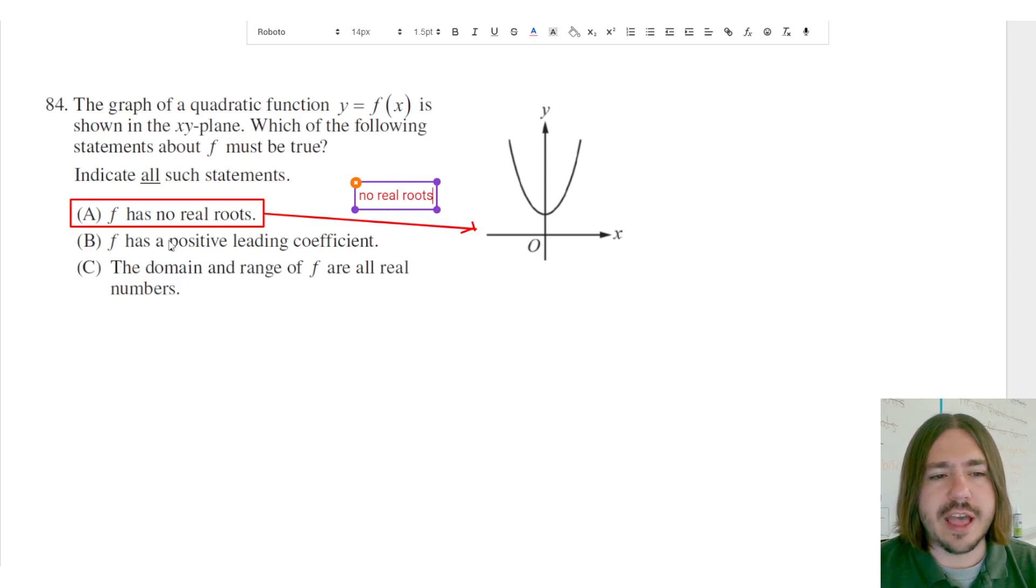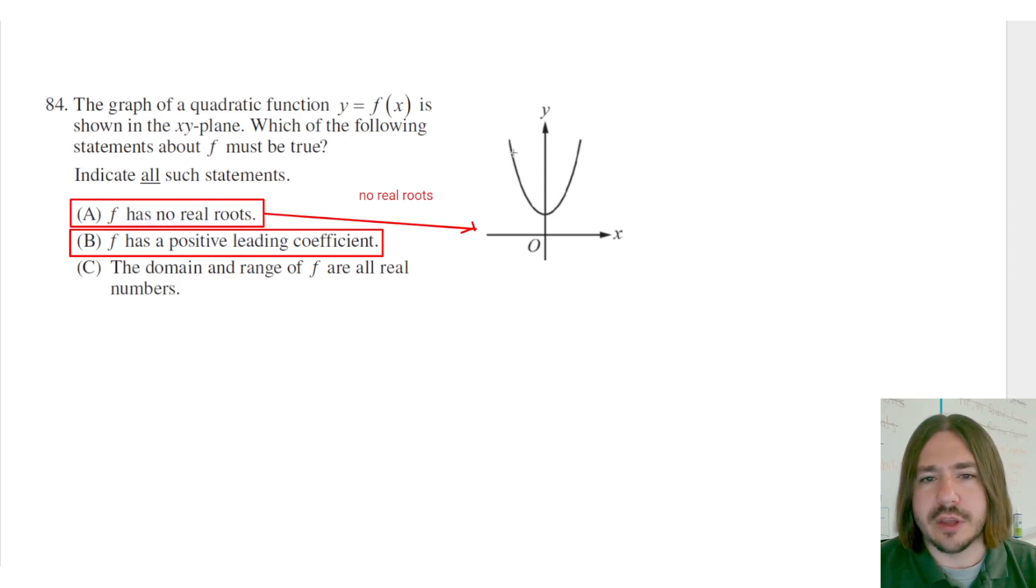Choice B says F has a positive leading coefficient, and we know that that must be true as well because of the end behavior of this graph. Notice how this parabola opens up. If it opens up, then the quadratic will have a positive leading coefficient.